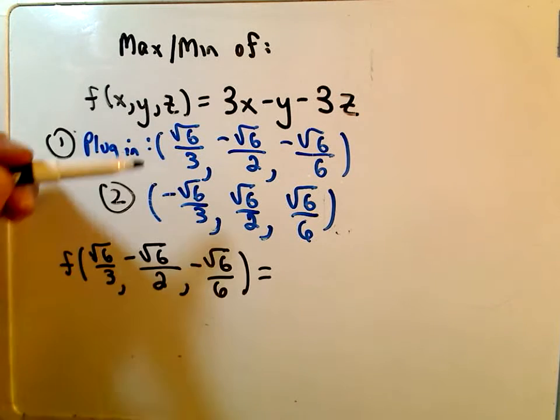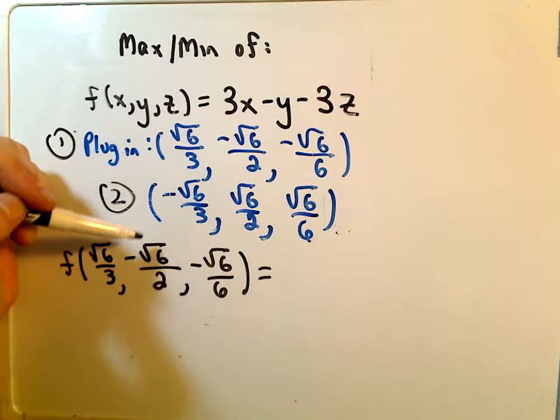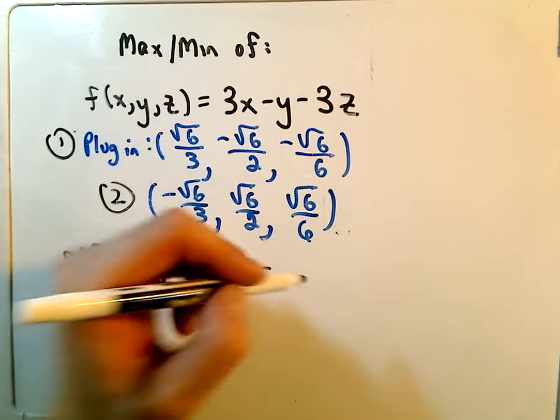So I'm going to plug my first point in: square root of 6 over 3, negative square root of 6 over 2, negative square root of 6 over 6.